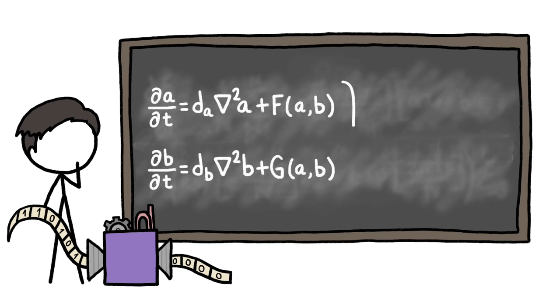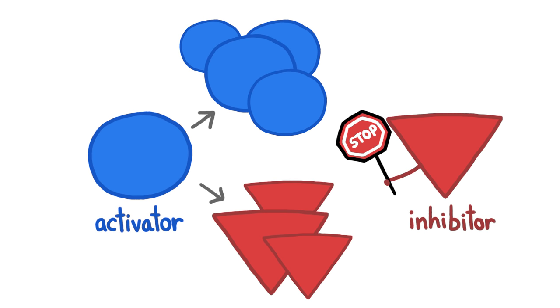The rules go something like this. Inside each theoretical organism, there are two substances, called an activator and an inhibitor. The activator stimulates production of both substances, while the inhibitor slows production down.